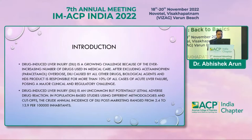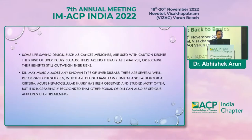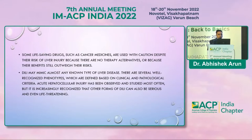DILI is an uncommon but potentially lethal adverse drug reaction. In population-based studies of different methodologies, the annual incidence is between 2.4 to 13.9 per 100,000, but it is very common with certain drugs. Some life-saving drugs like cancer medications are used with caution despite the risk of liver injury because there are no therapy alternatives or because their benefits still outweigh the risks. DILI may also mimic any known type of liver disease, and there are several well-recognized phenotypes defined based on clinical and pathological criteria.